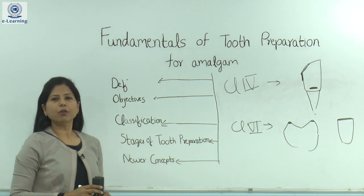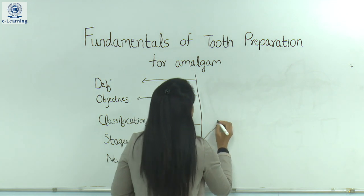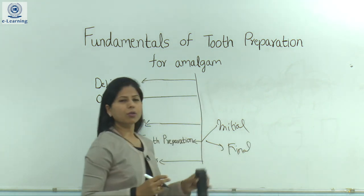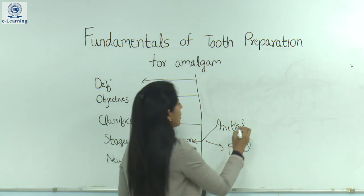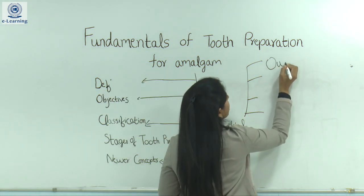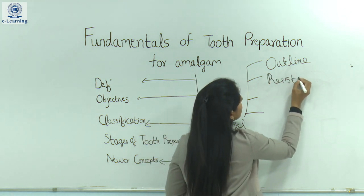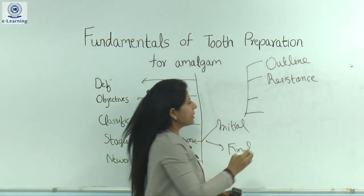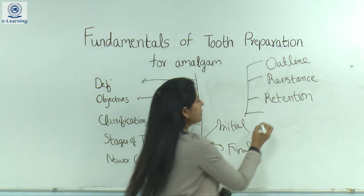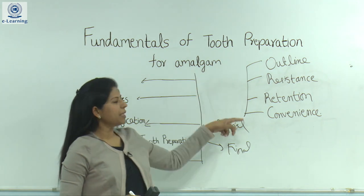Next, coming to the stages of tooth preparation. Tooth preparation is divided into two stages: first, the initial stage, and next, the final stage. The initial stage is further subdivided into four steps: first, the outline form; next, the primary resistance form; next, the primary retention form; and the last step is the convenience form. We will discuss each step one by one.